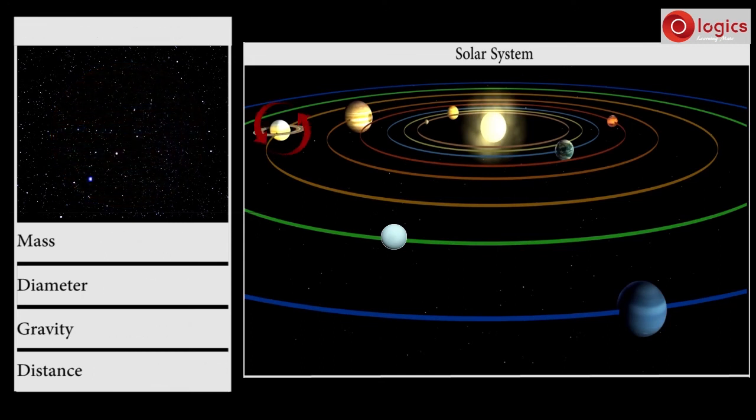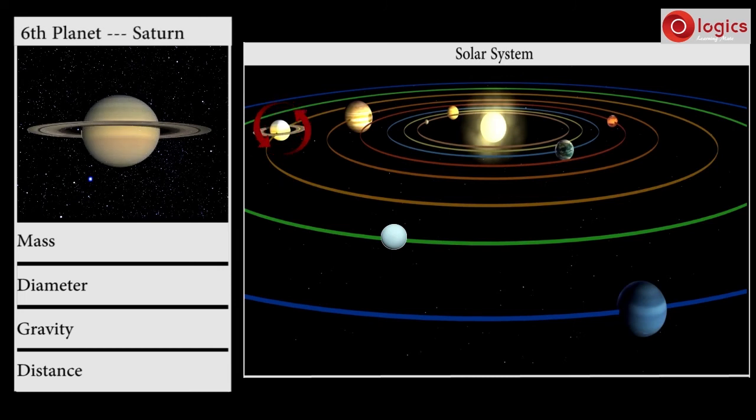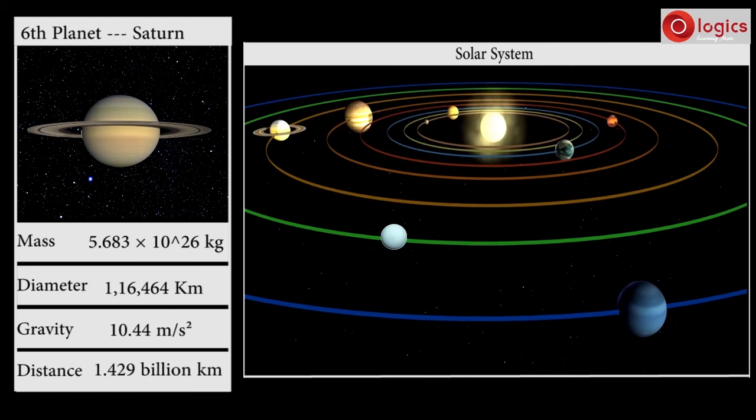The sixth planet in our solar system is Saturn. Its mass is 5.683 × 10^26 kilograms. Saturn's diameter is 116,464 kilometers. Gravity on Saturn is 10.44 meters per second squared, and Saturn is 1.429 billion kilometers from the Sun.